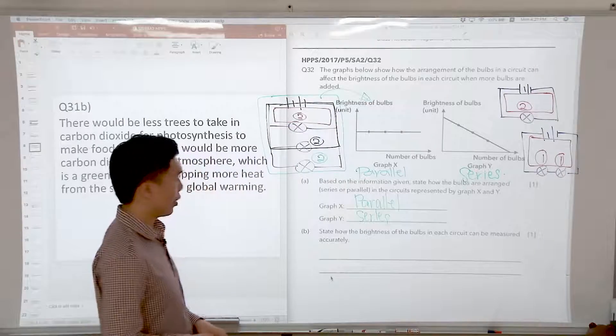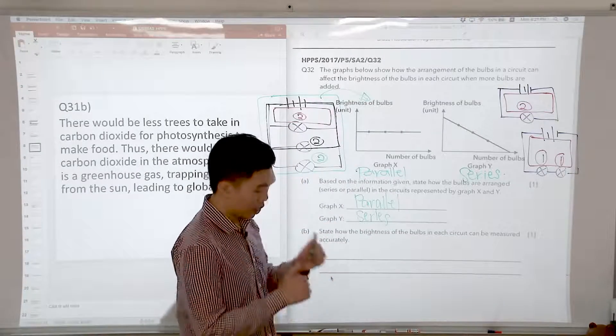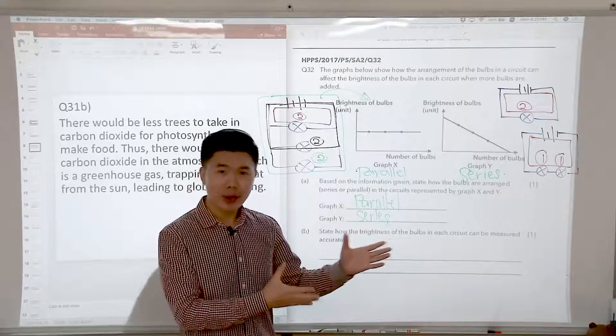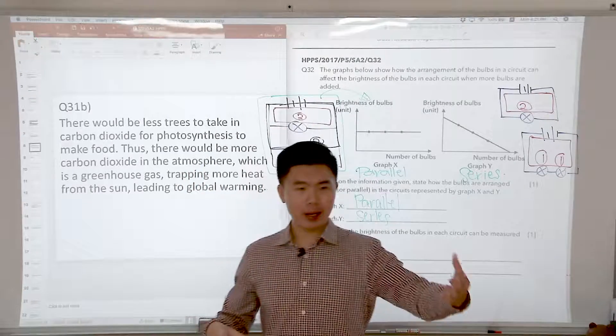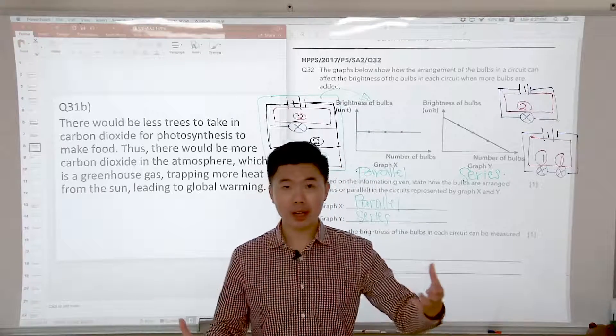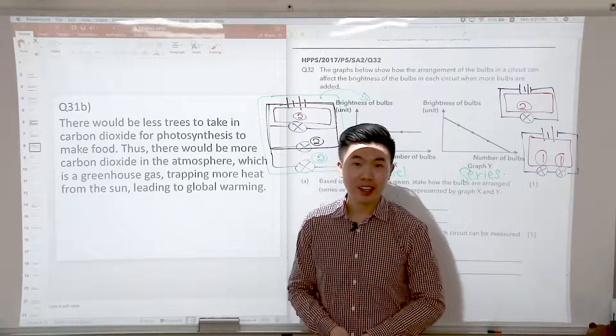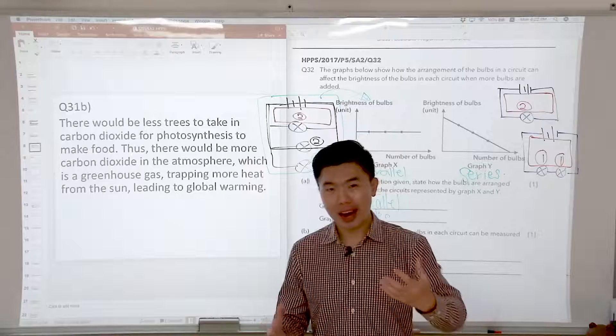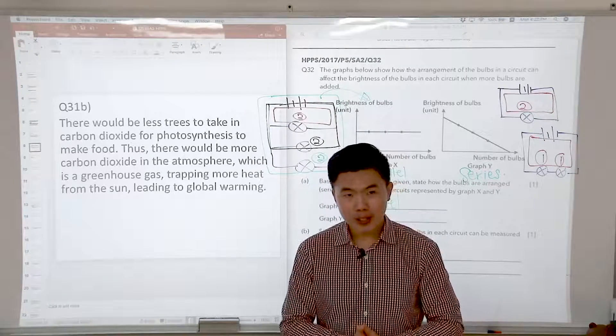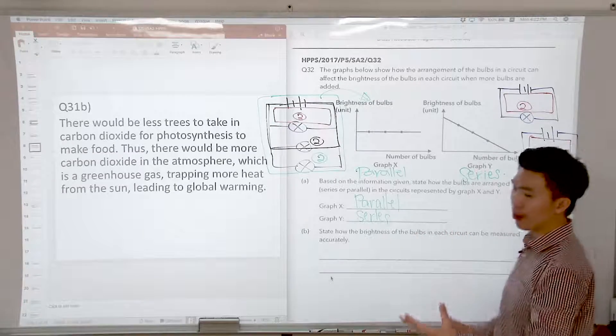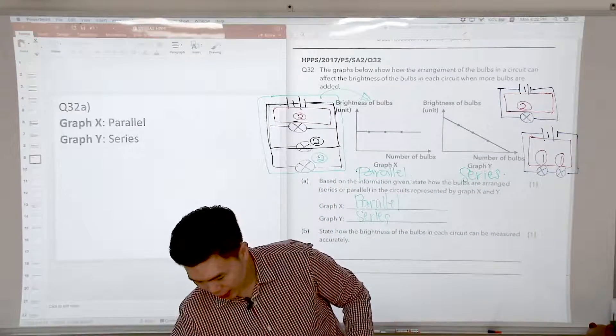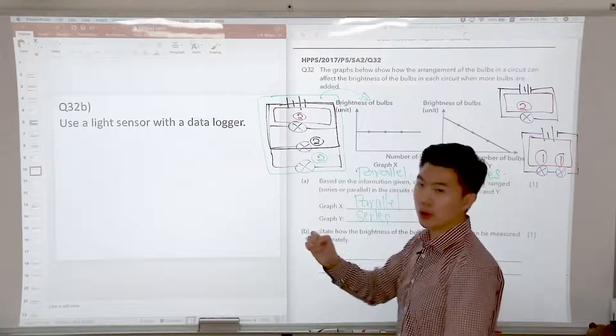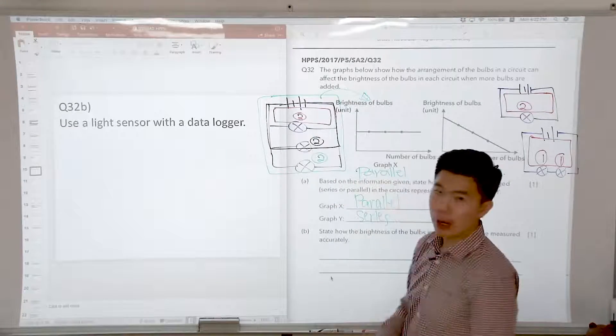State how the brightness of the bulbs in each circuit can be measured accurately. So is it accurate to be using our eyes to measure? Perhaps not, right? Because we can compare to say that one bulb is brighter than the other, but if somebody were to ask how much brighter, you will not be able to tell how much brighter, because how much brighter is really subjective to how your eyes receive the light. So a good way to determine how much light is produced by each of the bulbs will be to use our light sensor. Use the light sensor with a data logger to receive the light and then we'll be able to measure the amount of light emitted by each of the bulbs accurately.